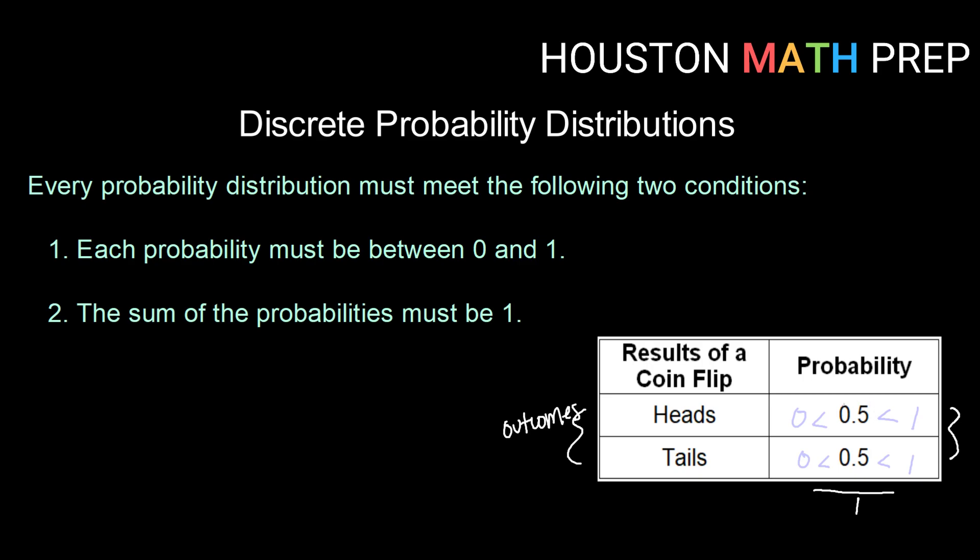And then finally, if we add up those two probabilities, 0.5 plus 0.5 does give us a total of 1. So this is a proper discrete probability distribution.